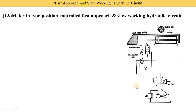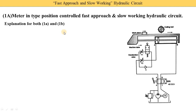Looking at the diagram — why is it called meter-in? Fast approach and slow working is generally required for extension strokes. Meter-in means the deceleration valve assembly — flow control valves F1, F2, and check valve C — is installed at the inlet of the extension stroke. That's why it is called meter-in. In the meter-out type, the same assembly is installed at the outlet of the extension. The A-port is the inlet for extension and the B-port is the outlet.